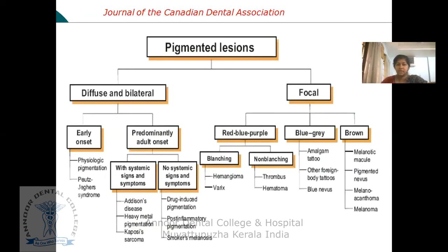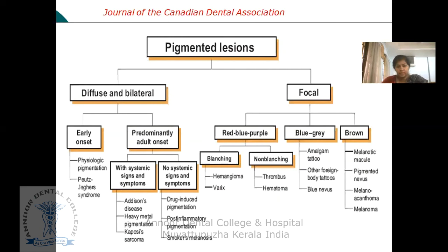Another classification is by the Canadian Dental Association, mainly based upon the distribution of the pigment. It can be classified as diffuse and bilateral pigmented lesions. These are again classified as early onset and predominantly adult onset. Early onset lesions include physiologic pigmentation and Peutz-Jeghers syndrome. Predominantly adult onset lesions are further classified as with or without systemic signs and symptoms.